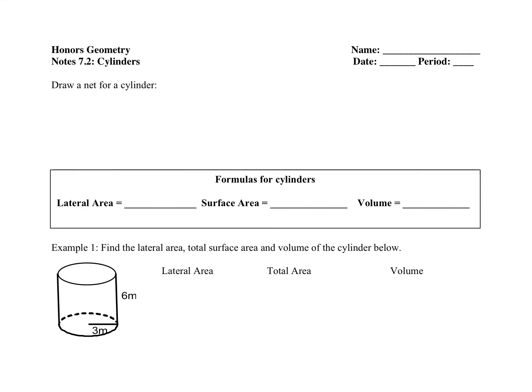In this video we're looking at section 7.2 which is on cylinders. If we are drawing a net for a cylinder, remember a net is a two-dimensional figure that represents a three-dimensional shape. Think about if you were to take a soup can and use a can opener to take off the top and bottom — you'd have two circles, one on top and one on bottom.